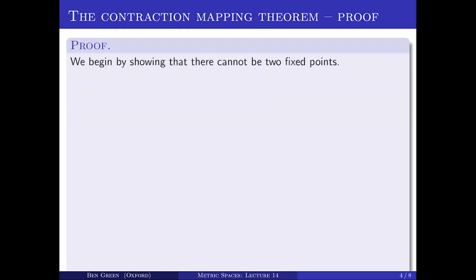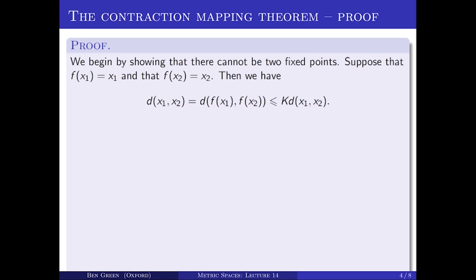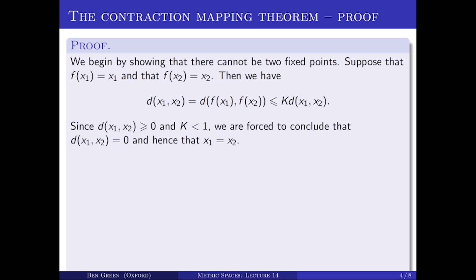So that's the contraction mapping theorem. The proof is quite fun. We'll begin with the easy part, which is showing that a fixed point, if there is one, is unique. Suppose that there were two fixed points: F(x₁) equals x₁ and F(x₂) equals x₂. Then the distance between x₁ and x₂ is the same as the distance between F(x₁) and F(x₂), which by the contraction property is at most K times the distance from x₁ to x₂. But distances are non-negative and K is strictly less than one, so the only way this could possibly happen is if the distance from x₁ to x₂ is zero — in other words, x₁ equals x₂. So there can't possibly be two fixed points of a contraction F.